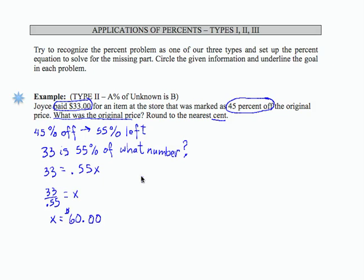So let's respond to our goal, which was to determine the original price. The original price was $60. And that really does make sense because the $33 is not quite half off. So there's our 45% off.